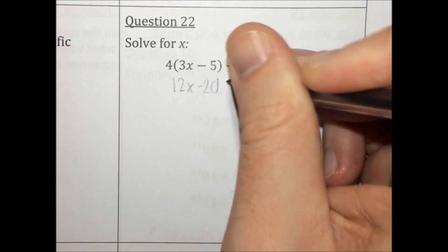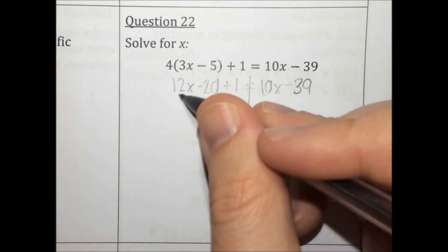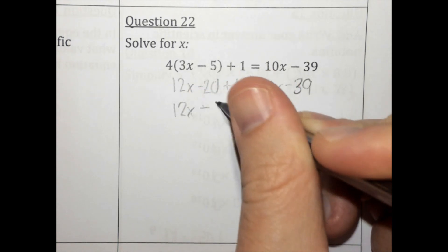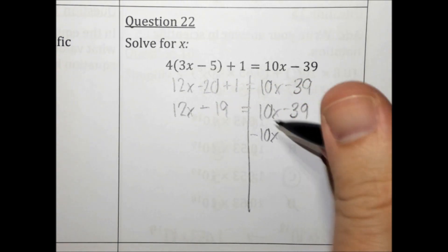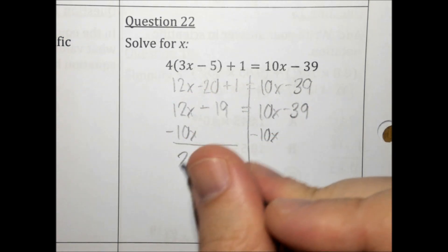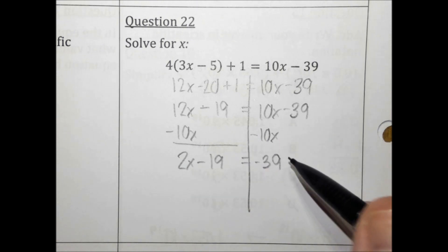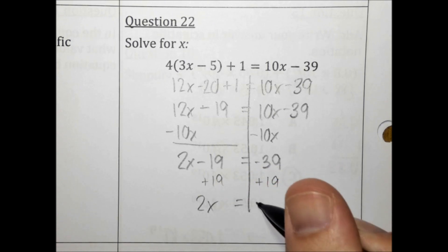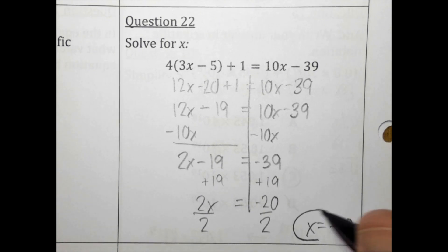Solve for x. Let's distribute first and get 12x minus 20 plus 1 equals 10x minus 39. We have some combining like terms to do: 12x, and negative 20 plus 1 is negative 19. We have variables on both sides — let's move the smaller one to get all variables on one side. Then plus 19 to both sides gives 2x equals negative 20. Divide both sides by 2 and we get x equals negative 10.